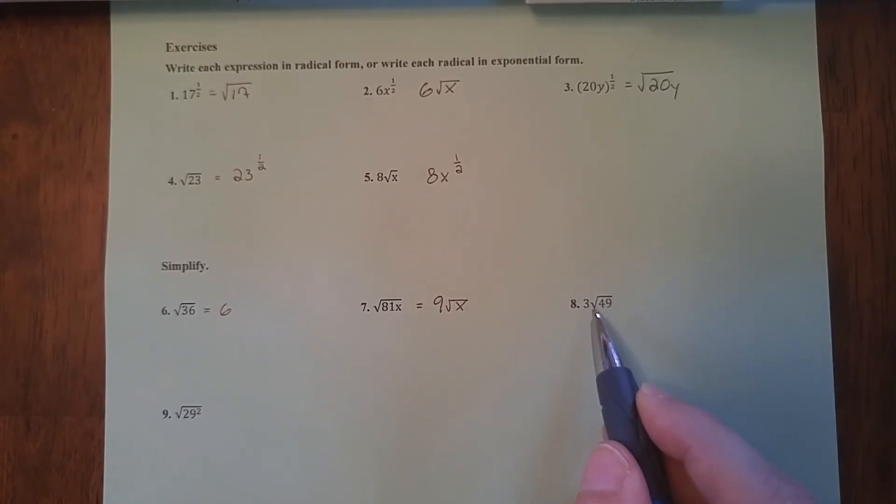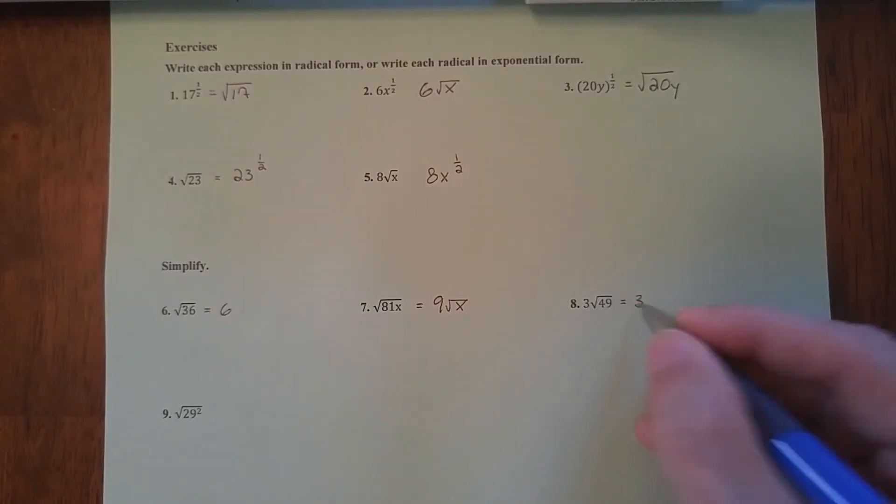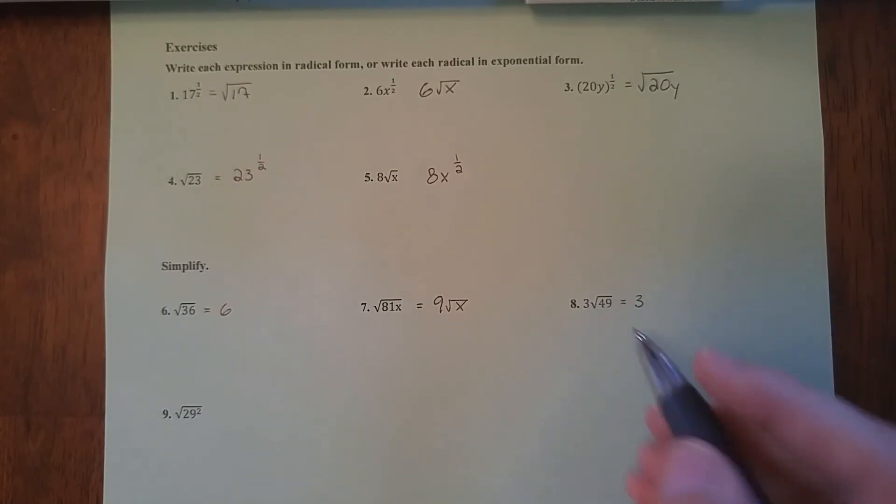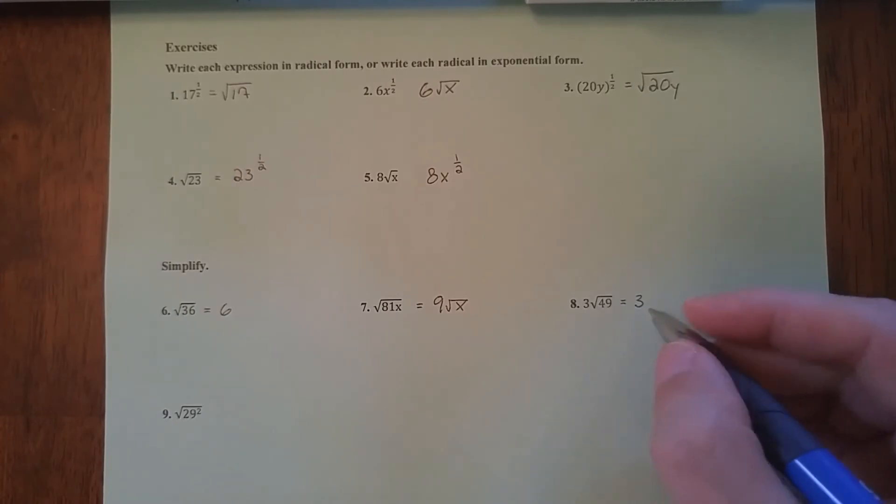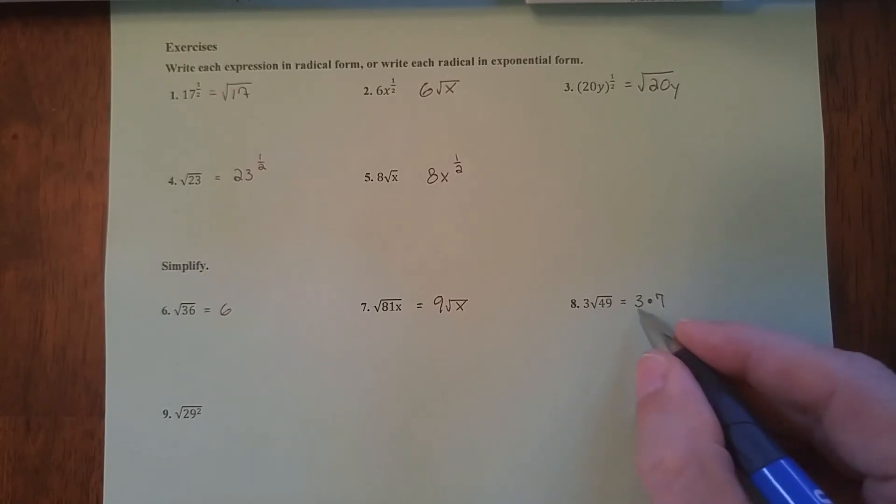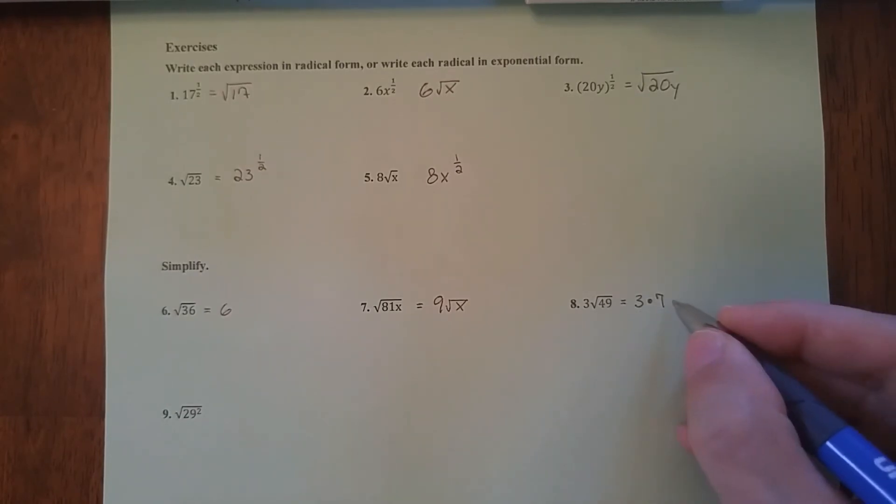Now, right here, I have 3. And if you have a number in front of a radical, it means multiplication. So I have 3 times square root of 49. I know that my 3 is a 3. It's not under a radical, so I leave it alone. But this square root of 49, is there anything that multiplies by itself to equal 49? Yes. The answer is 7. So this square root of 49 becomes 7. Don't forget your multiplication sign. This is not 37. Now, 3 times 7, I can simplify that, and that is 21.